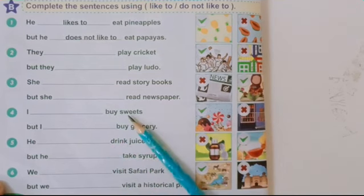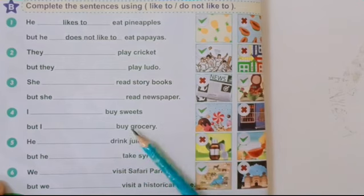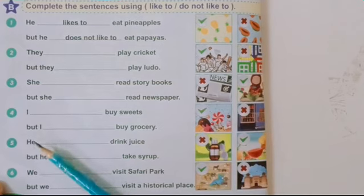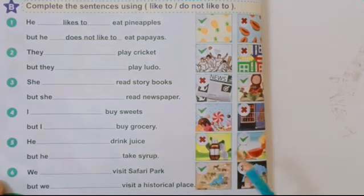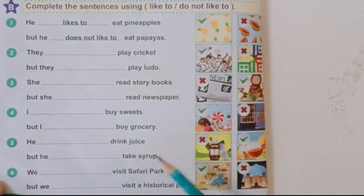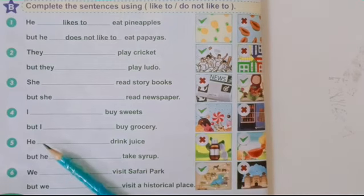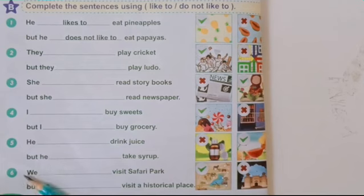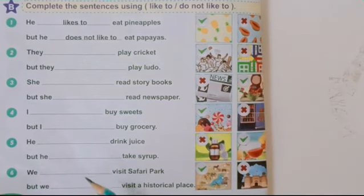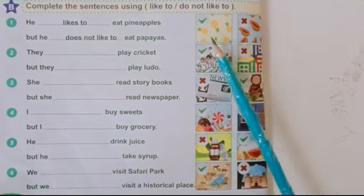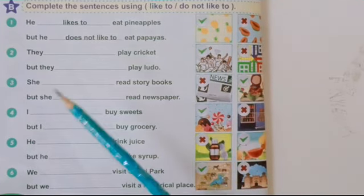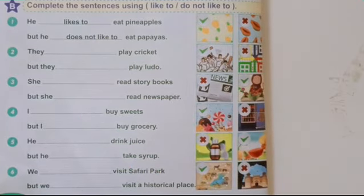Next: 'I like to buy sweets, but I do not like to buy grocery.' Look at the picture carefully. Next: 'He likes to drink juice, but he does not like to take syrup.' He is singular, so we use 'likes to' and 'does not like to.' Next: 'We dash visit safari park.' We is plural — 'We like to visit safari park, but we do not like to visit a historical place,' as you can see a cross on the picture. Remember: 'like to' and 'love to' for plural, 'likes to' and 'loves to' for singular.